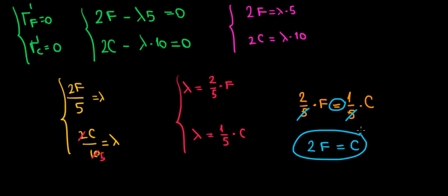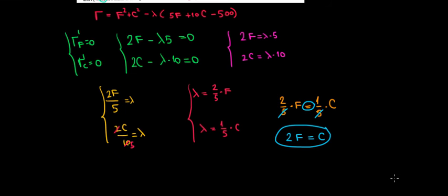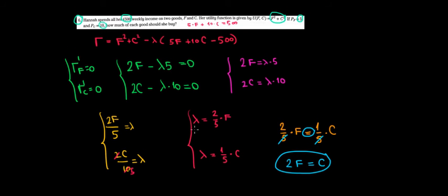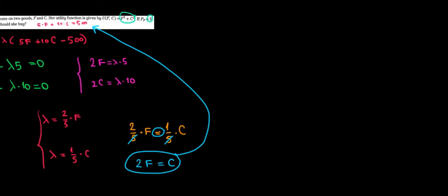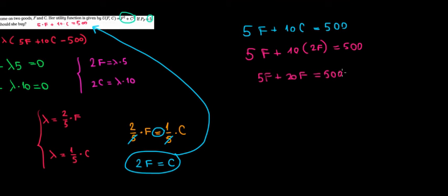The budget constraint is 5F plus 10C equals 500. Instead of clothing, we'll use 2 times F. So 5F plus 10 times 2F equals 500. That's 25F equals 500. The optimal consumption of food is 500 divided by 25, which equals 20 units.